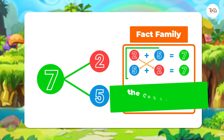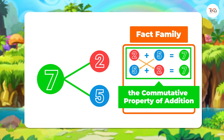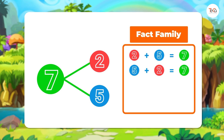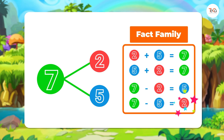Can you see the commutative property of addition here? Third, we have 7 minus 2 equals 5. Fourth, 7 minus 5 equals 2.